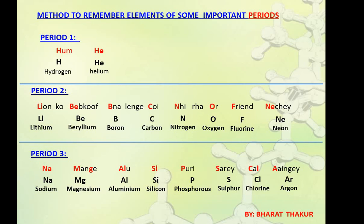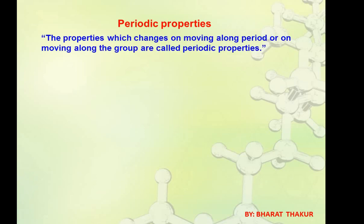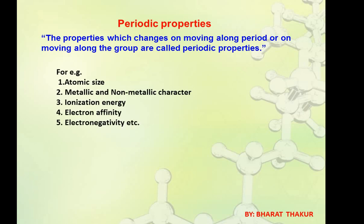Now, periodic properties are properties which change on moving along a period or along a group. When the properties change either on moving along a period or group, these properties are called periodic properties. For example: atomic size, metallic and non-metallic character, ionization energy, electron affinity, electronegativity, etc.